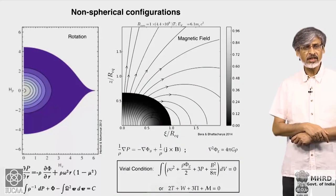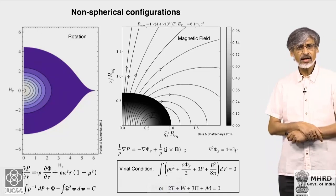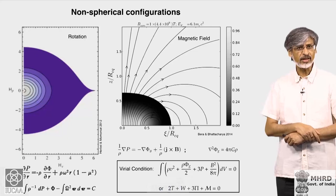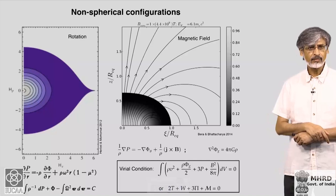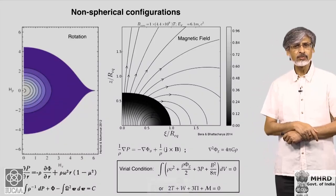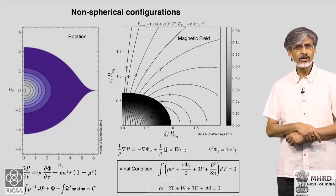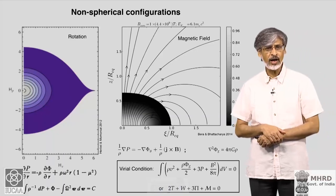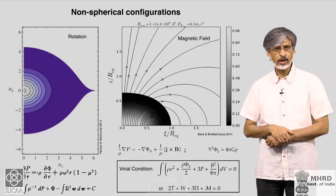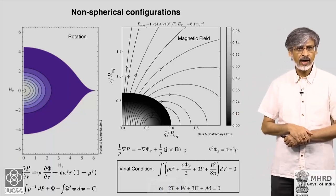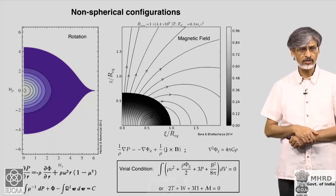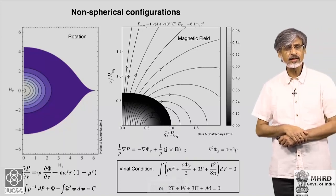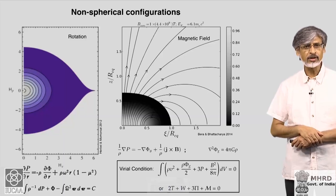Coming now to rotation and magnetic field: in both cases, one would end up with a configuration which is no longer spherically symmetric — it could be axisymmetric, but not spherically symmetric. Therefore, the formalism used earlier — either the TOV equation or the Newtonian hydrostatic equilibrium where we write dP/dr as a function of r only — can no longer be used, because r is not the only variable in the structure. Appropriate changes must be made in the equilibrium conditions.